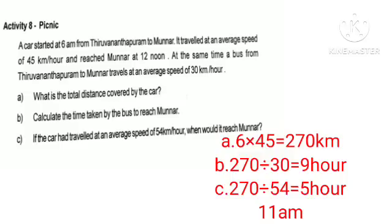Speed is 45 and we will do 270 km. Calculate the time taken by the bus to reach the destination. The time taken by bus is equal to 270 by 30 is equal to 9 hours. If the car had travelled at an average speed of 54 km per hour, when would it reach? So we will do 270 by 54 is equal to 5 hours.